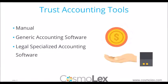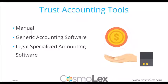Let's talk about some accounting tools. Today this usually falls under one of three categories. Manual, which includes written ledgers or spreadsheets — still surprisingly common. You also have generic accounting software, typical among many small businesses — many attorneys use programs such as QuickBooks. And the third item is legal specialized accounting software, which caters specifically to the unique needs of attorneys. You do have these three options overall.